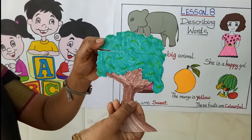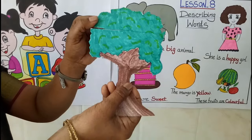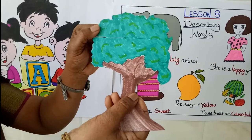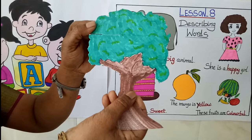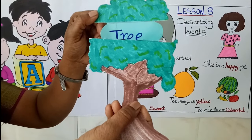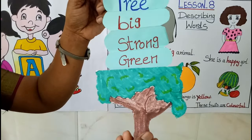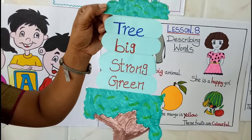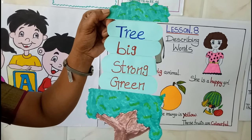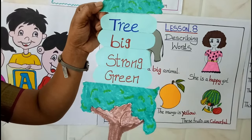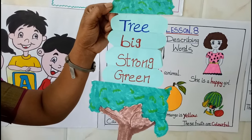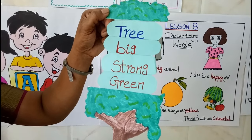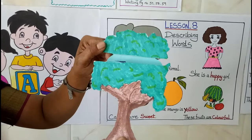Now the next picture — you tell me what picture is this? Tree. Now we have to describe about tree. What will you be saying about tree? Tree is big. Tree is strong. Tree is green in color. So these are all describing words about tree. Very good.